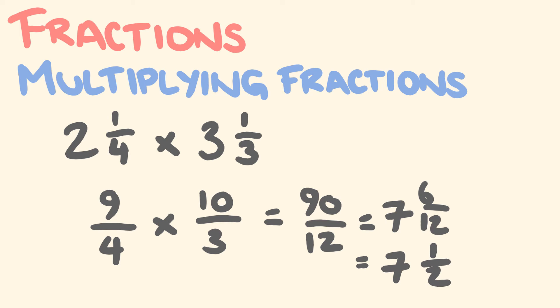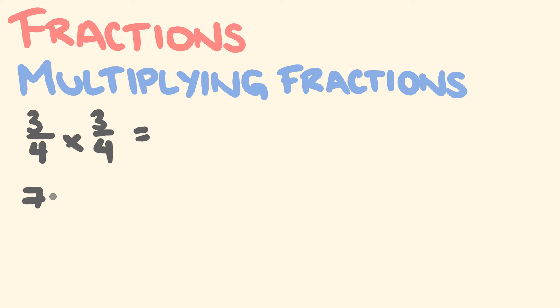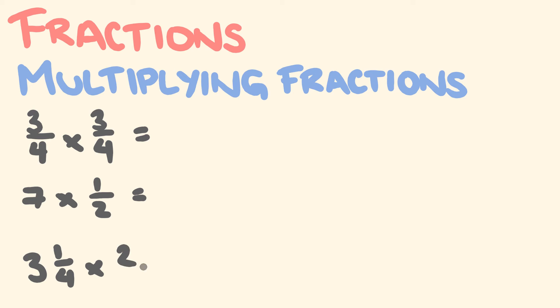Give these a try yourself. First: three-quarters times three-quarters — that's three-quarters squared. Second: seven times one-half. Third: three and a quarter times two over three. See how you go.